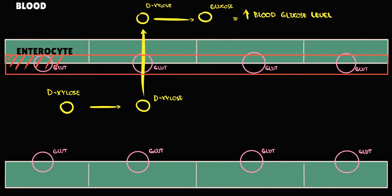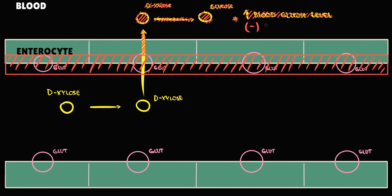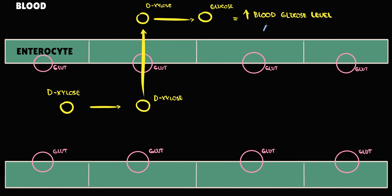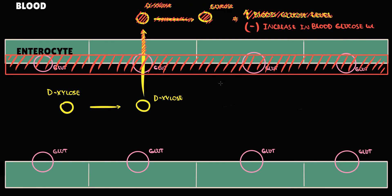But if damage to the duodenum occurs, GLUT transporters on enterocytes become disrupted, and even absorption of monosaccharides like D-xylose becomes impossible — there will be no increase in blood glucose level. So if enterocytes work fine and D-xylose intake causes an increase in blood glucose, then the causative factor is probably absence of the enzyme, since absorption works fine. But if intake of D-xylose does not cause an increase in blood glucose level, then the causative factor is damage to the duodenum causing malabsorption of carbohydrates.